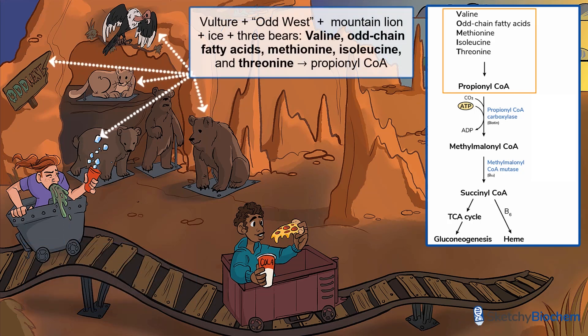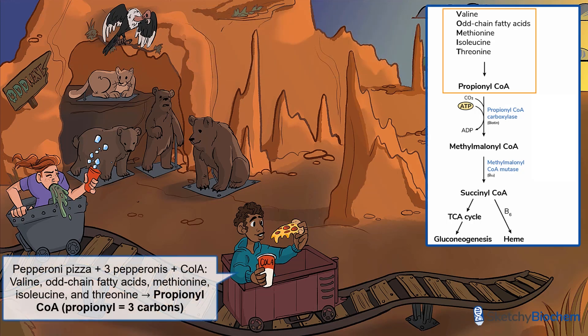We've illustrated a vulture for valine, a mountain lion for methionine, ice for isoleucine, and three bears for threonine. You can check out our amino acids overview sketch to learn more about them. All of those ingredients ultimately get turned into propionyl-CoA, represented by that tasty, cheesy, delicious, melty, scrum-diddly-umptious pepperoni pizza and crisp, refreshing, ice-cold cola. I guess I'm really hungry.